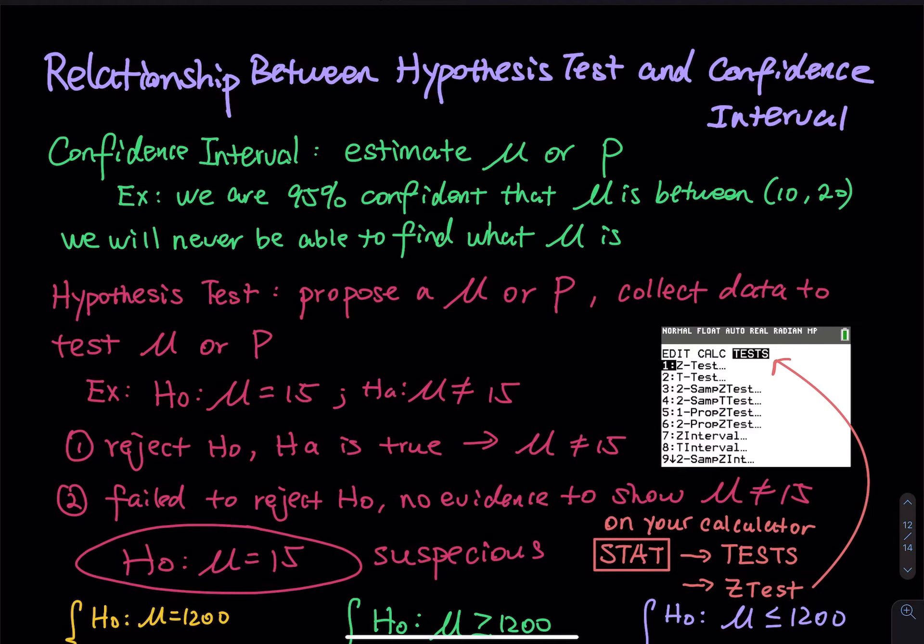You have a hypothesis test. You set up an H0, HA, and then you give me alpha equals to whatever you like. I can construct a confidence interval to tell you whether you should reject or fail to reject.